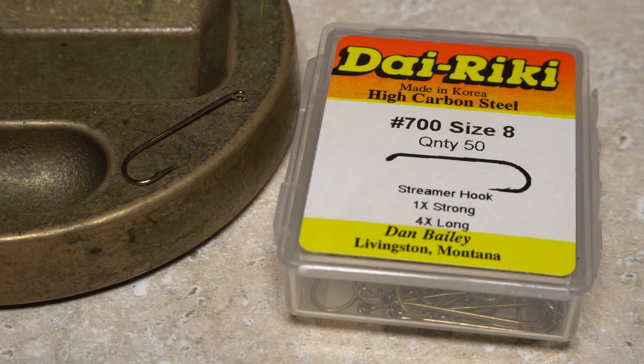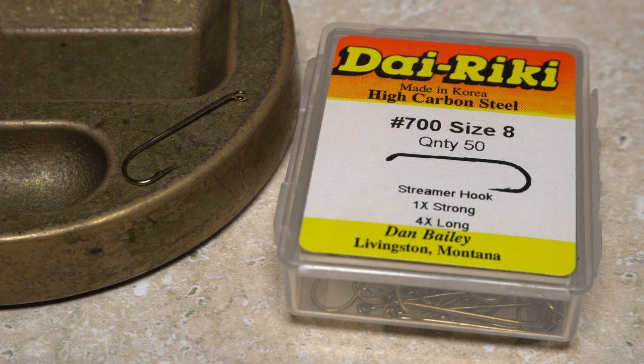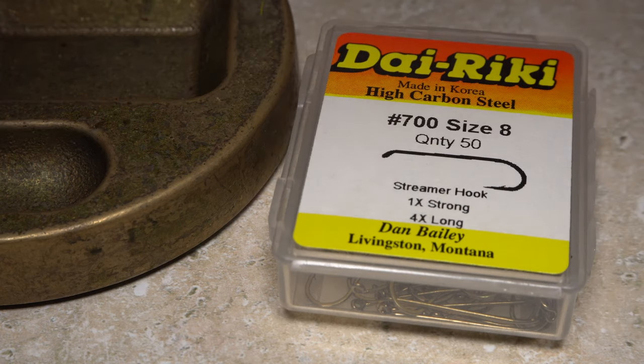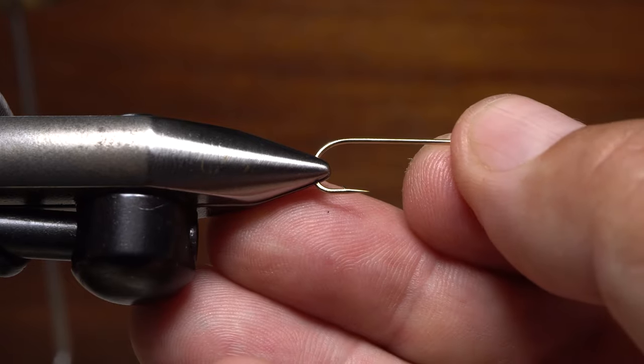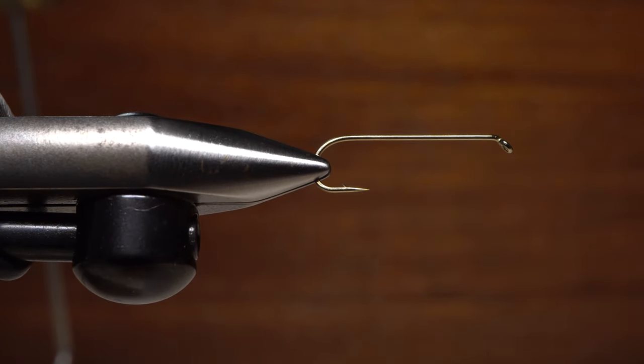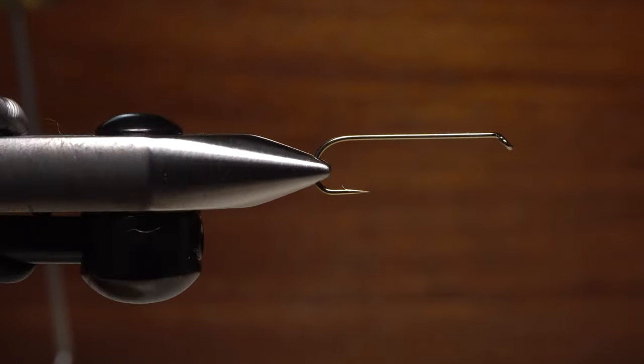For a hook, I'm going to go with a Dairiki No. 700 in size 8, but any 4X long streamer hook will do. Begin by getting the hook firmly secured in the jaws of your tying vise and making sure it rotates correctly.